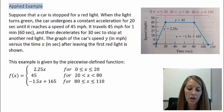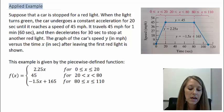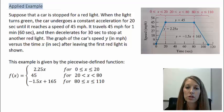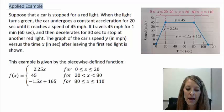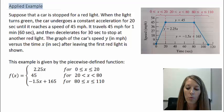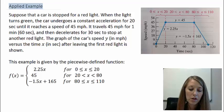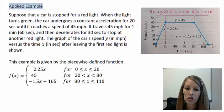Suppose a car is stopped for a red light. When the light turns green, the car undergoes a constant acceleration for 20 seconds until it reaches a speed of 45 miles per hour. It then travels at 45 miles per hour for one minute, which is 60 seconds, and then decelerates for 30 seconds to stop at another light. We want to graph the car's motion, with speed on the y-axis and time on the x-axis.